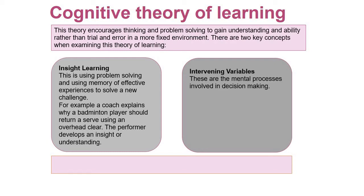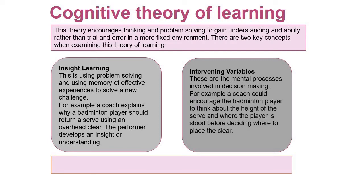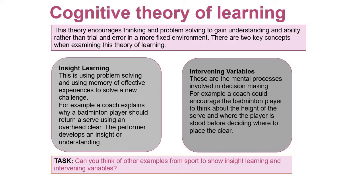Second key concept: intervening variables - the mental processes involved in decision making. A coach could encourage the badminton player to think about the height of the serve and where the player stood before deciding where to place the clear, getting them to think about what they're actually doing and the impacts it will have - if they put it to a certain area, it's going to make it easier or harder for their opponent to return the shot. Can you think of other examples from sport to show insight learning and intervening variables? Pause the video and try.